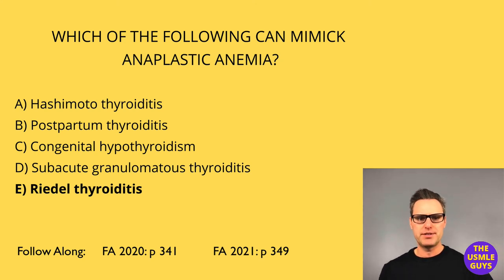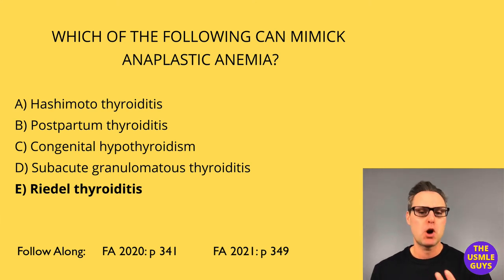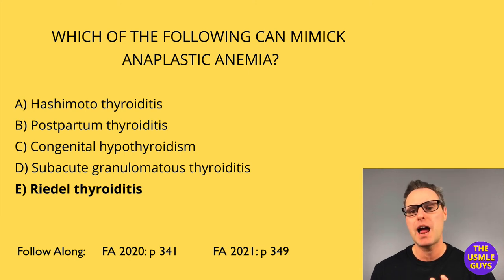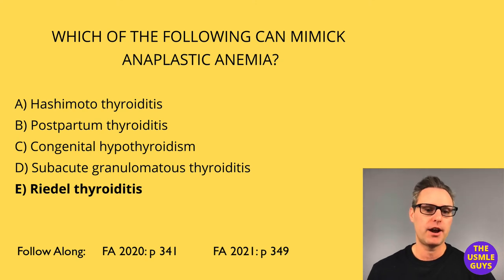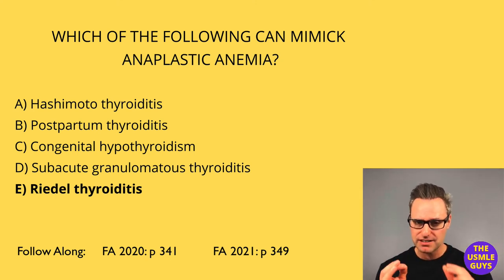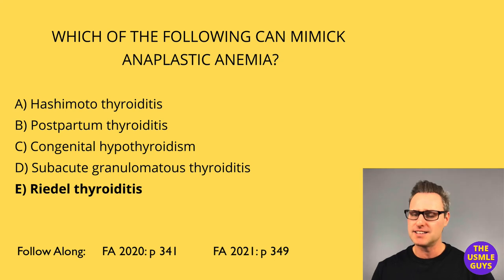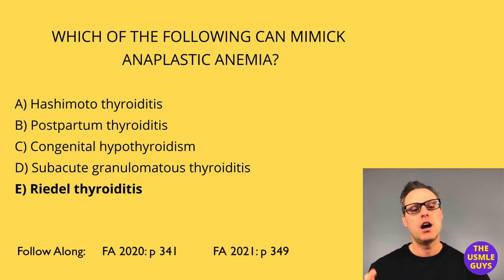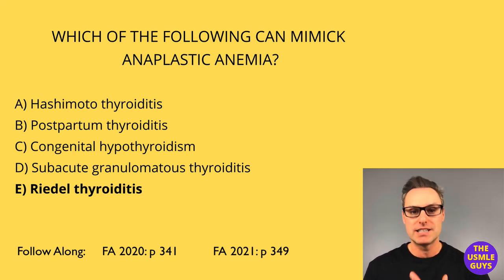Let's cover a couple of the other causes of hypothyroidism, starting with postpartum thyroiditis. This is a self-limited thyroiditis characterized by transient hyperthyroidism, hypothyroidism, or hyperthyroidism followed by hypothyroidism. Following resolution, most patients are euthyroid. In a vignette, the thyroid is typically described as normal size and painless. Watch for the presence of lymphocytic infiltrates with occasional germinal center formation in the histological description.